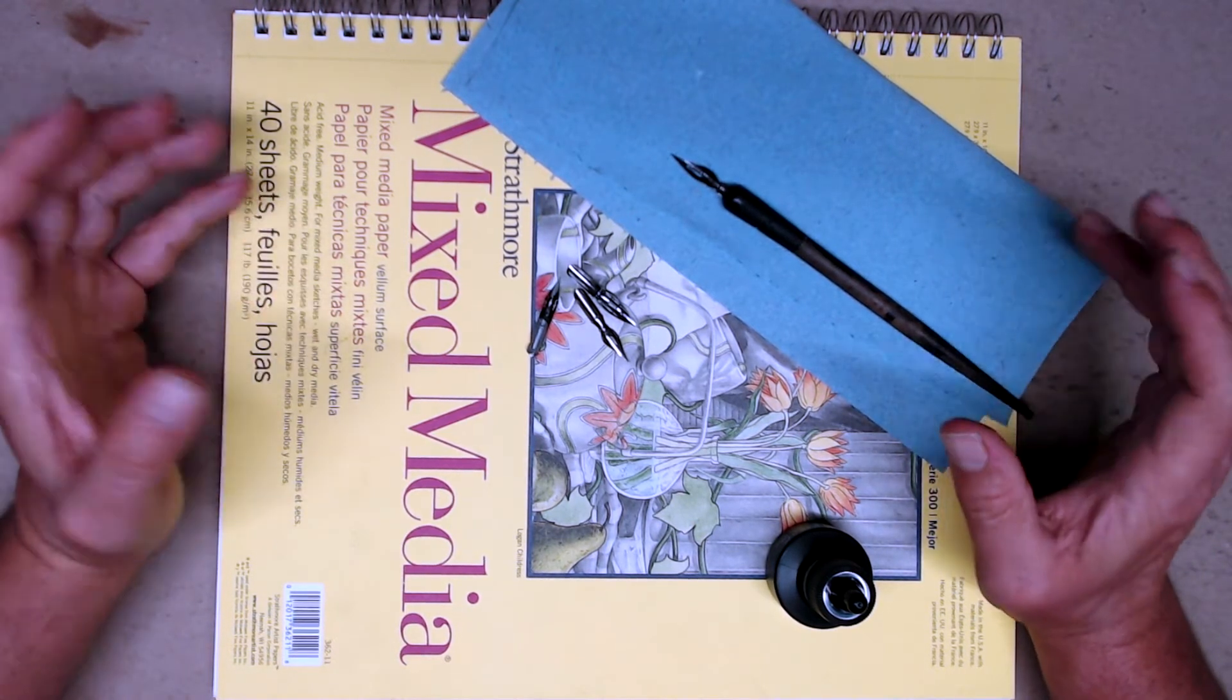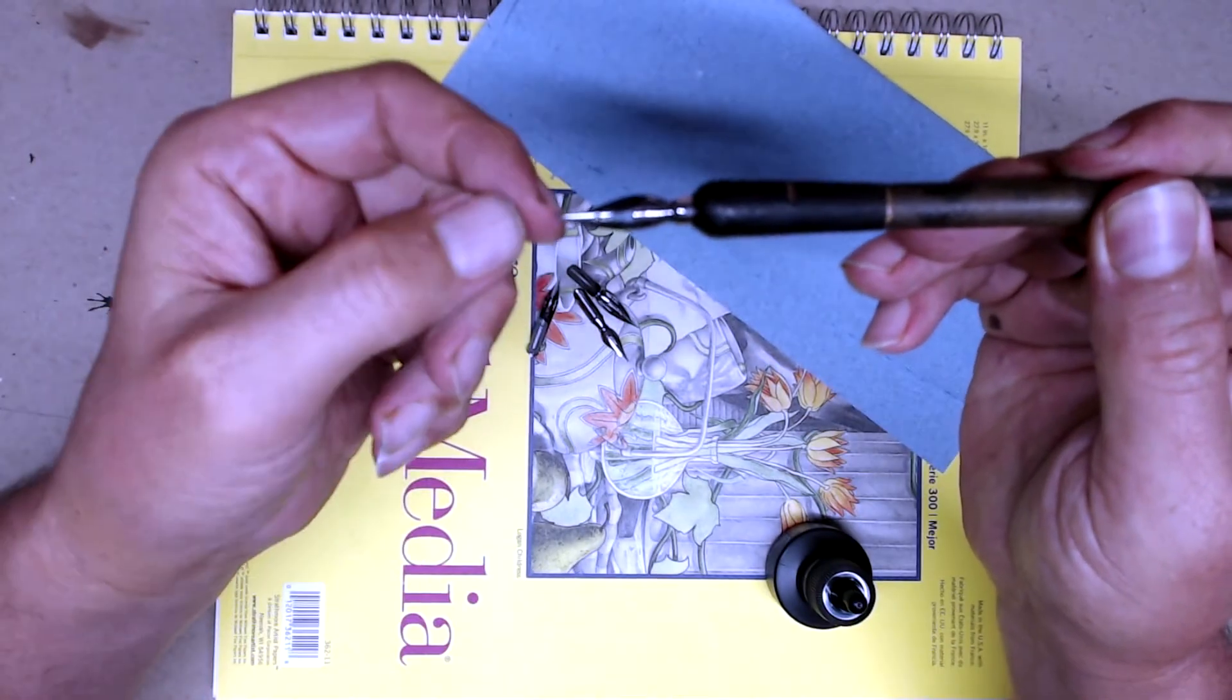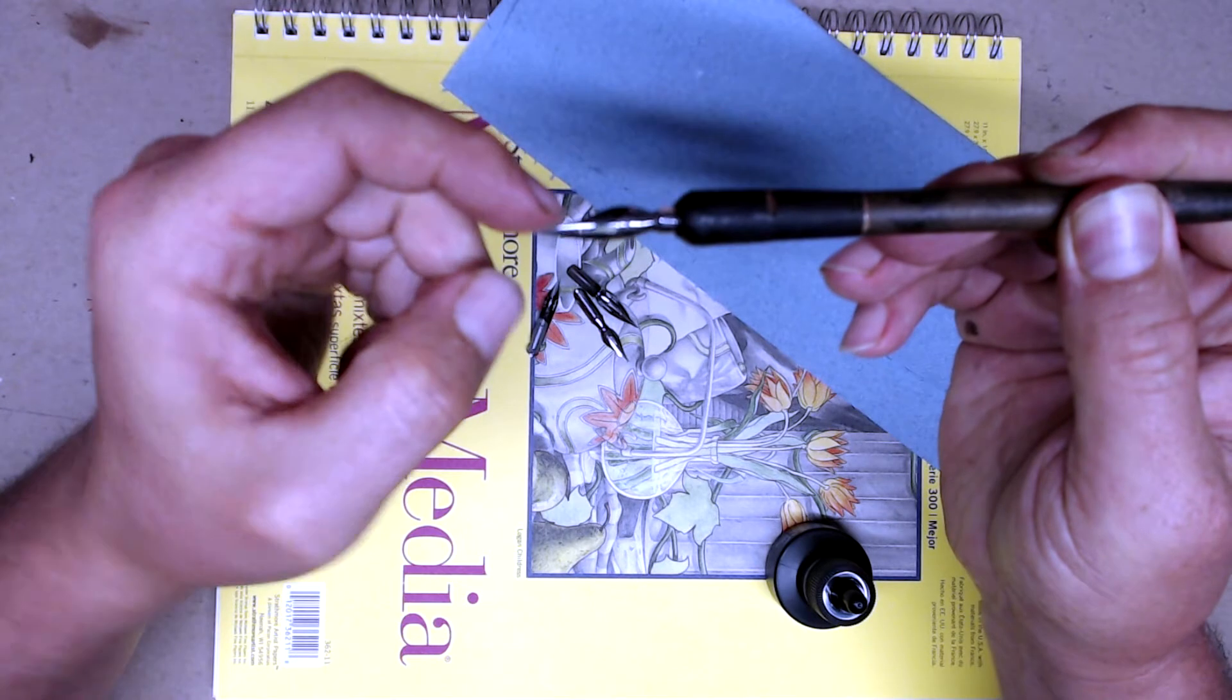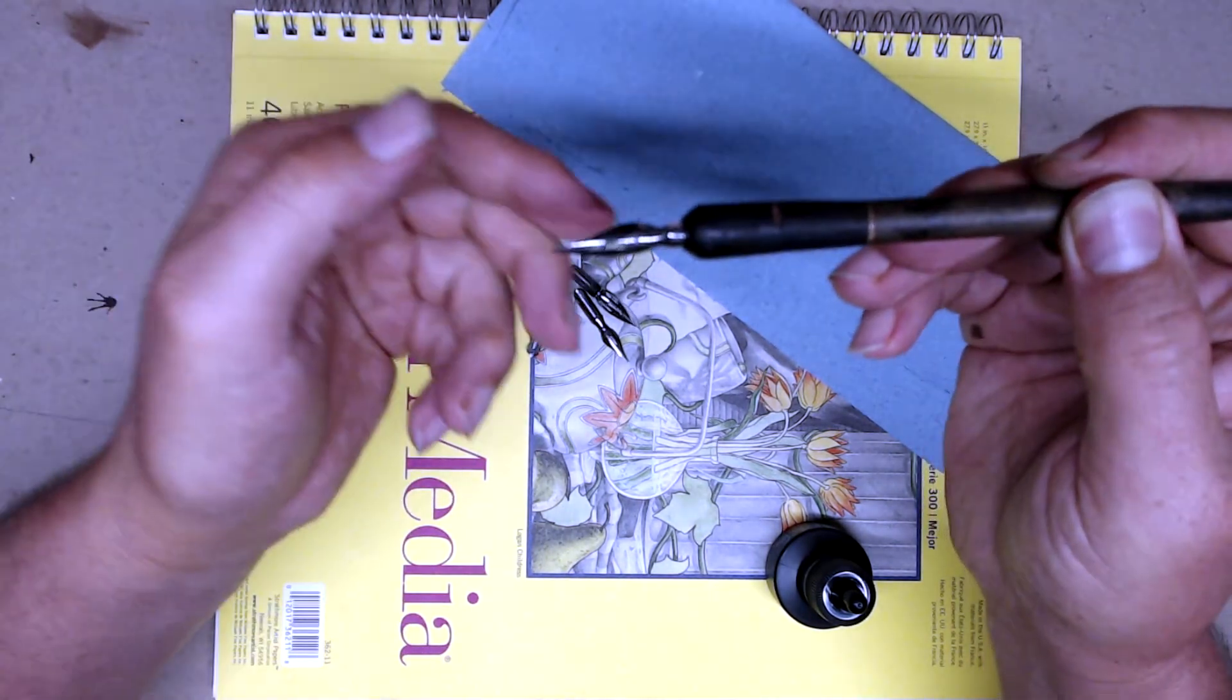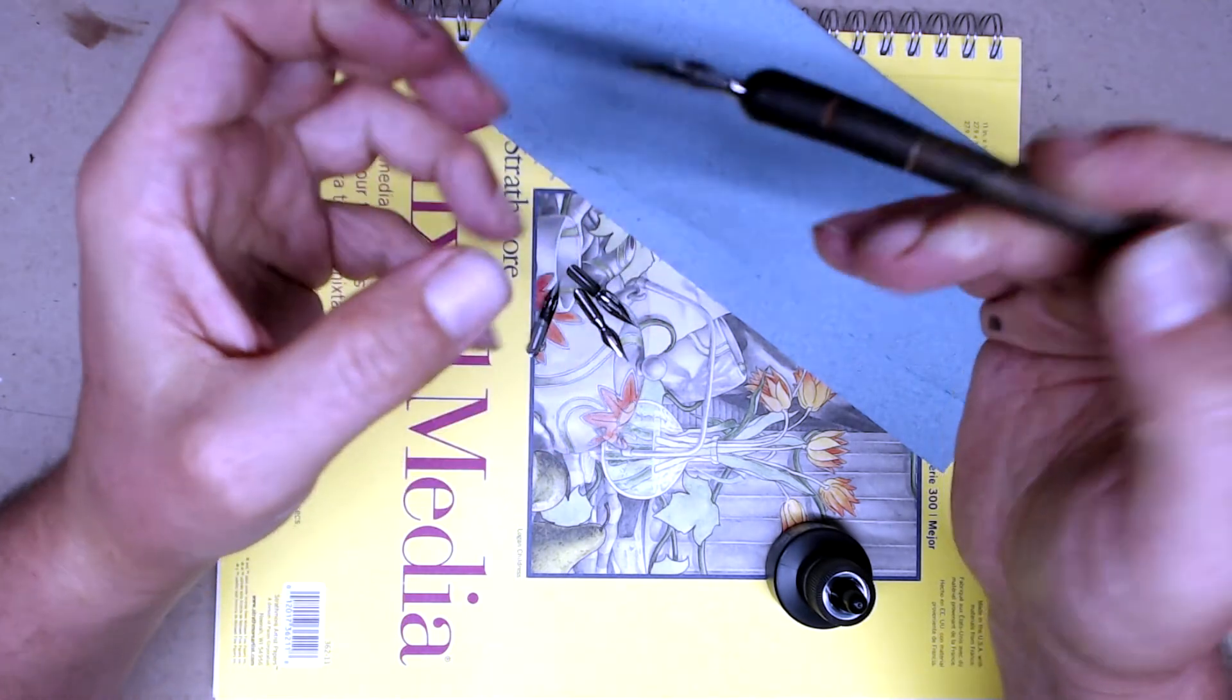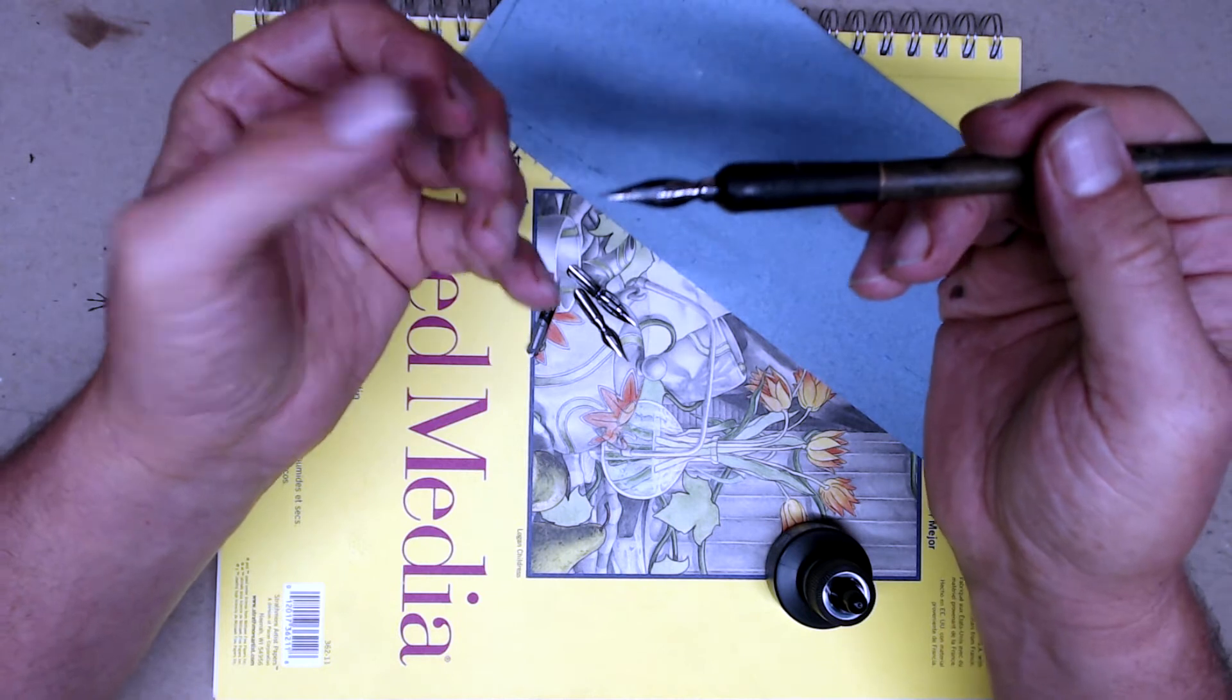This is where the dip nib really shines. The tines, let's see if you can see this, the tines are the fork. The two little prongs on each side of the nib separate when you put pressure, which creates a thicker line. Now, some nibs are a little stiffer and easier to control. They're more for beginners. They're the ones you're going to be using mostly.